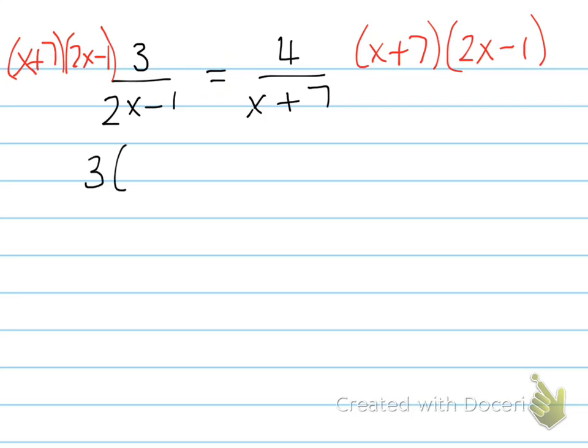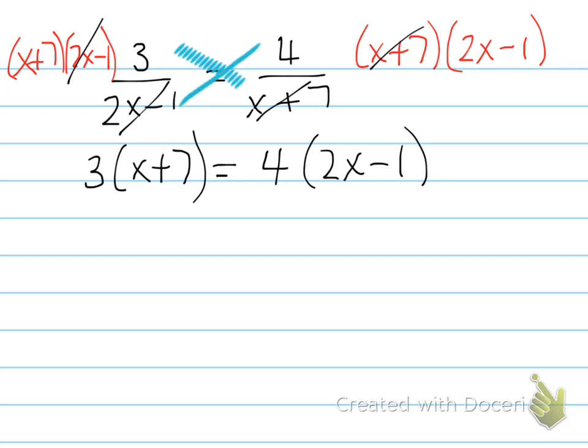You have 3 times x plus 7 because those two will cancel, and you have that all equal to 4 times 2x minus 1 because those two will cancel. You can see essentially all you've done is cross-multiply: 3 times x plus 7 and 4 times 2x minus 1.